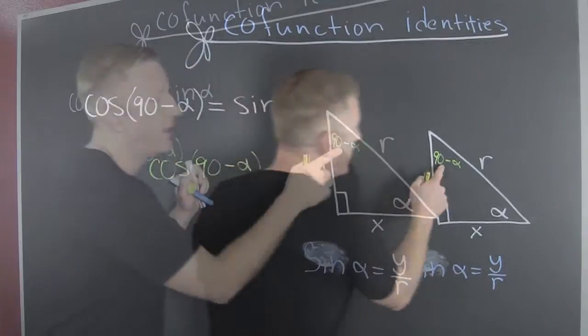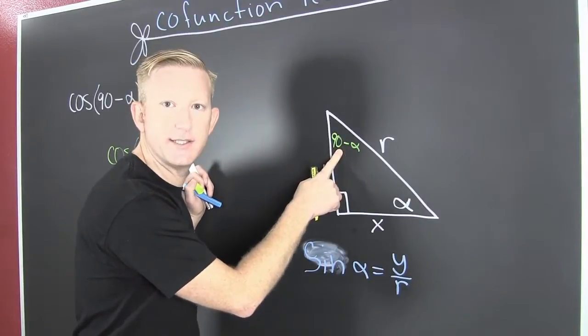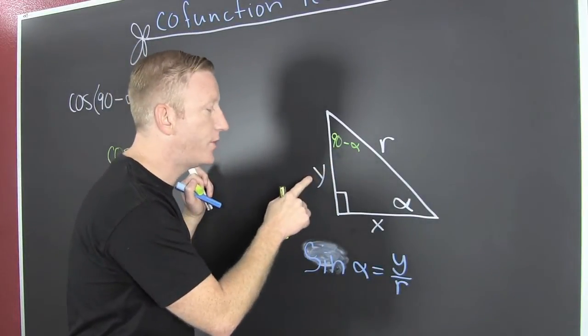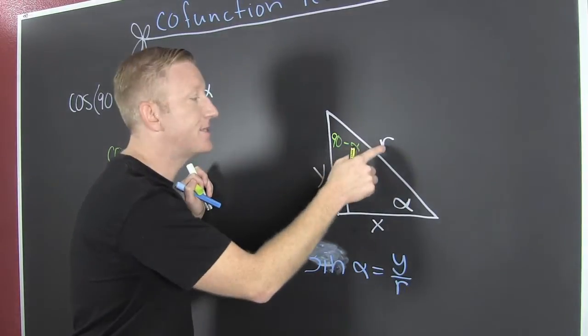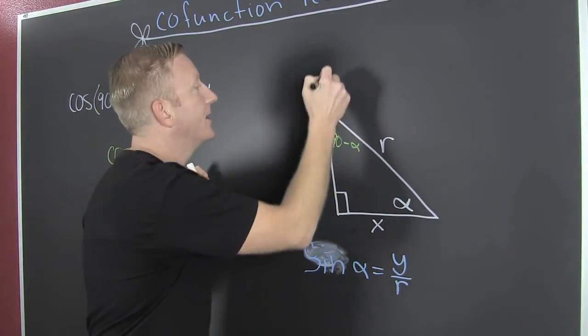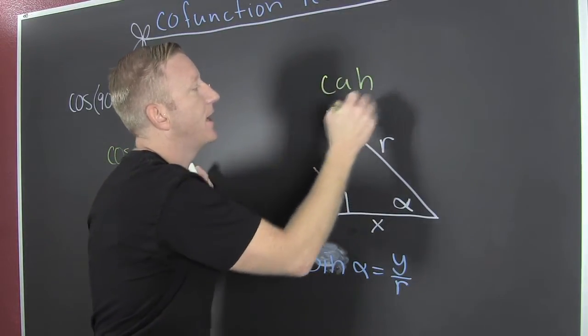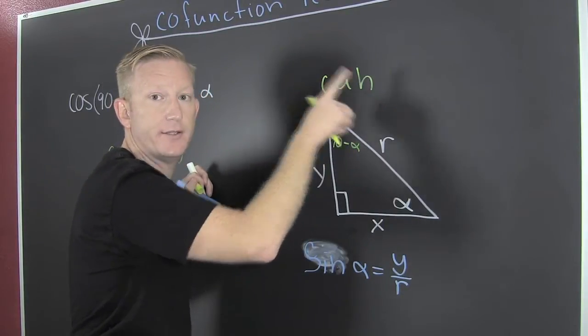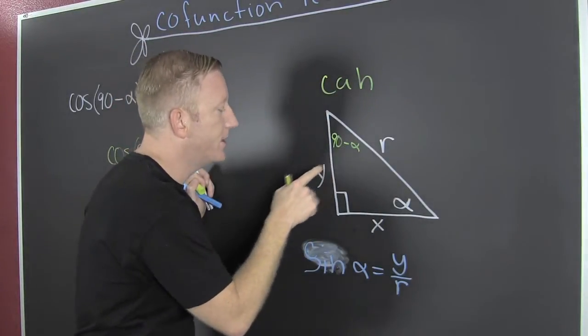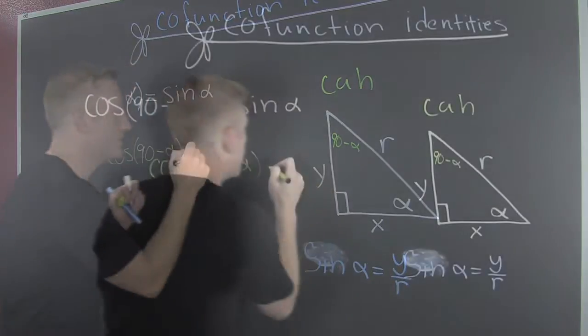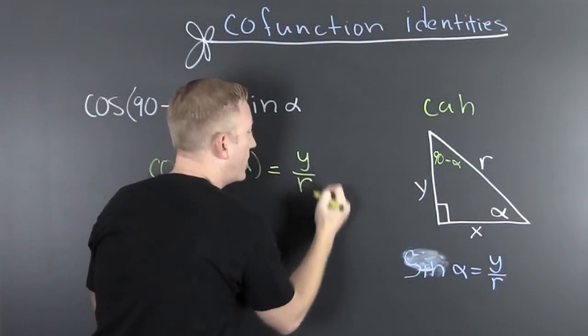So, I take a look. What side is adjacent to this one, meaning next to? Well, that one is next to, and then that is the hypotenuse. For cosine, adjacent over hypotenuse. So, we go and we look. The adjacent over the hypotenuse. So, then this is y over r.